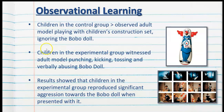Children in the control group observed the adult model playing with a children's construction set, completely ignoring the Bobo Doll. Children in the experimental group witnessed the adult model being very aggressive — behaviours such as punching, kicking, tossing and verbally abusing the Bobo Doll.